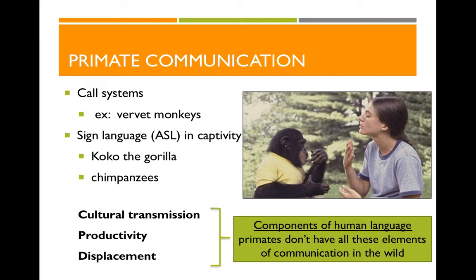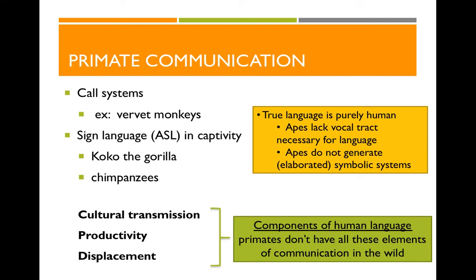When we think about these primate examples in the context of human communication, we have to recognize that primates don't have all the elements of human language in their communication systems in the wild. There are three main components of human language: cultural transmission, productivity, and displacement. True language is purely human — we don't see other animals creating symbolic systems in the wild or generating their own signs that fully flesh out our definition of language. Apes also lack the vocal apparatus necessary for language.